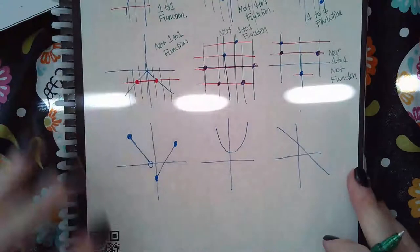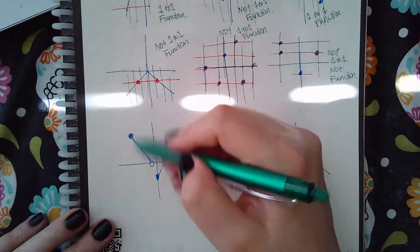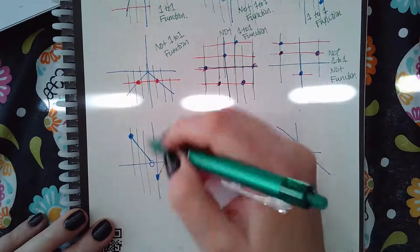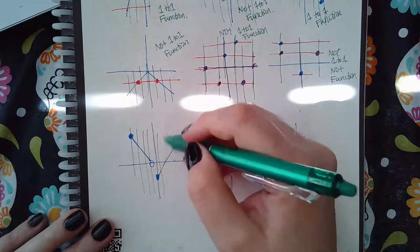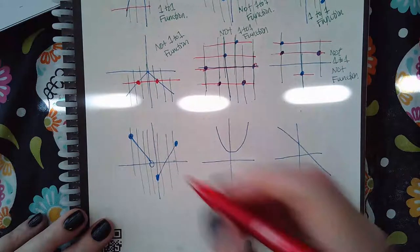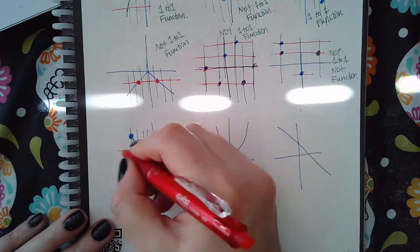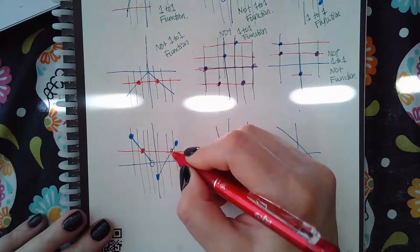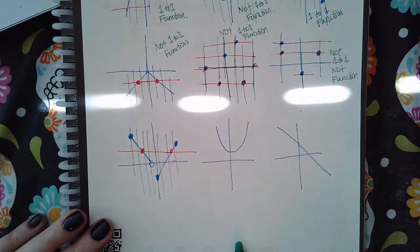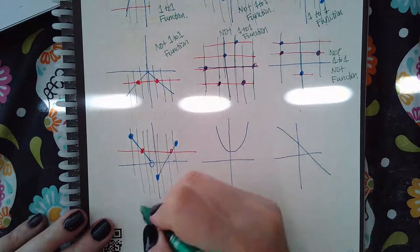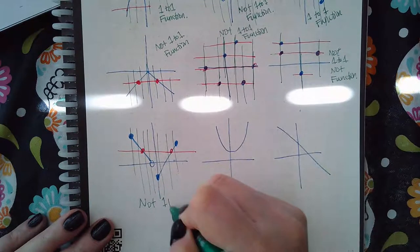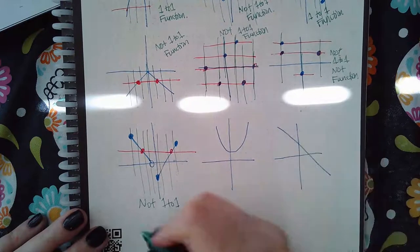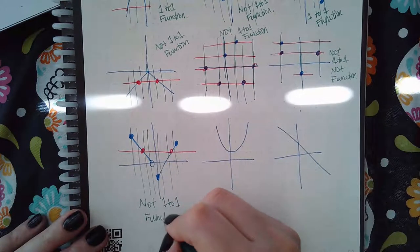Now let's look at this one. This one passes the vertical line test. But for the horizontal line test — nope, I draw a horizontal line right there and I hit it twice. So this one is not one-to-one. It is a function, but it's not a one-to-one function.